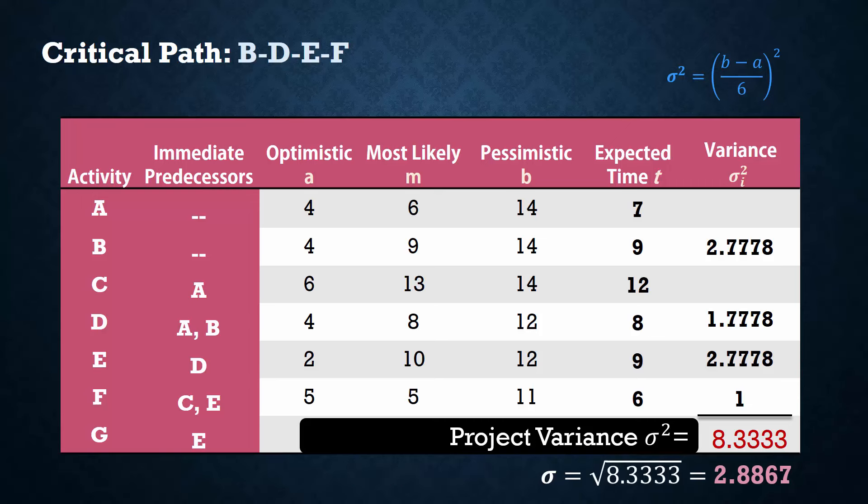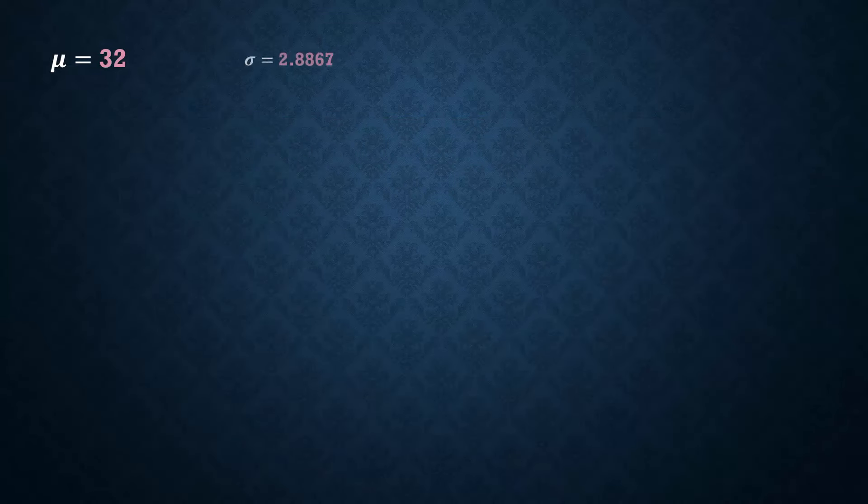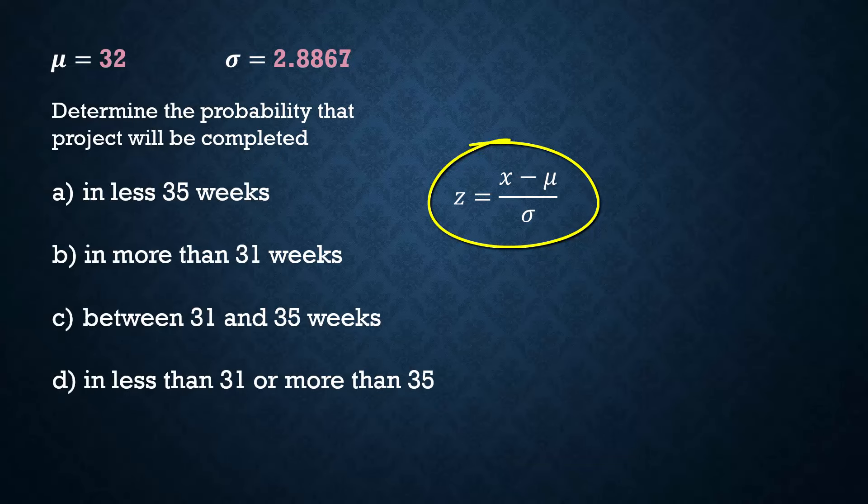Although the uncertain activity time estimates are beta distributed, we can approximate the project completion time by a normal distribution. In this case, with mean equals 32 and standard deviation 2.8867. So we can apply the z formula to answer these questions.